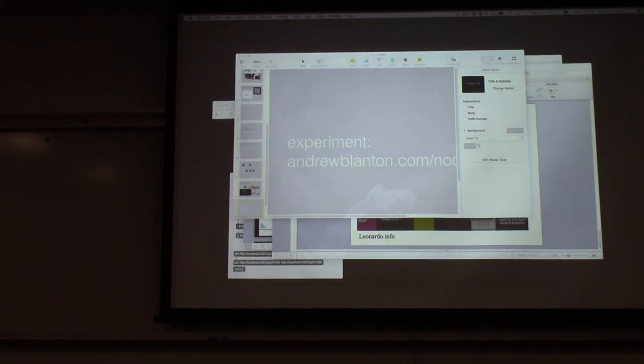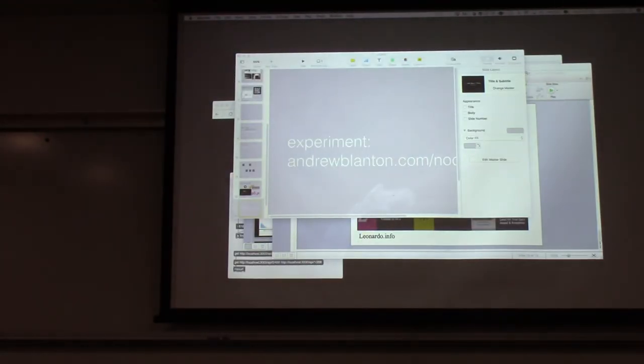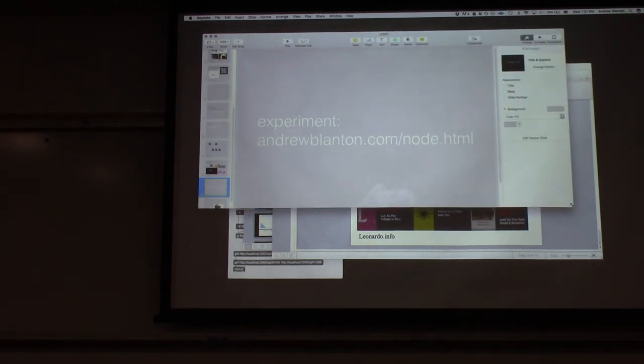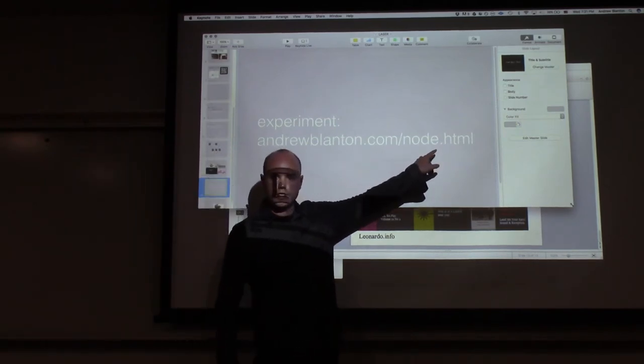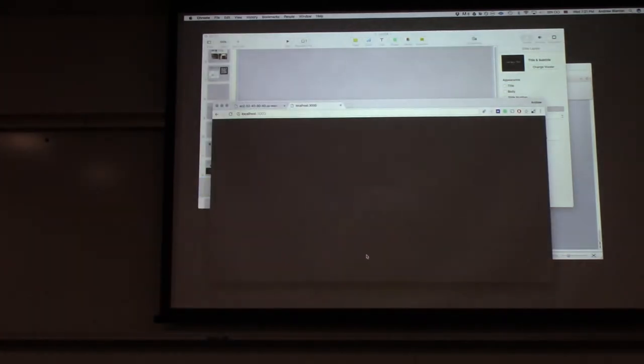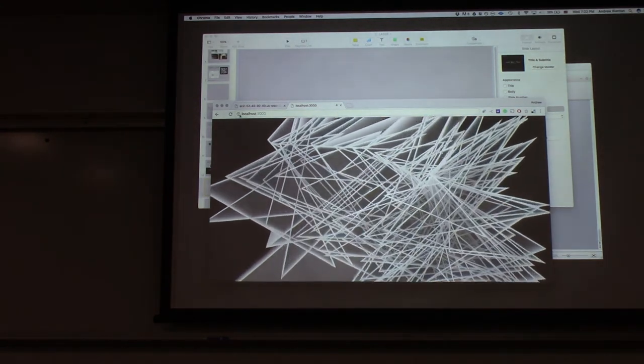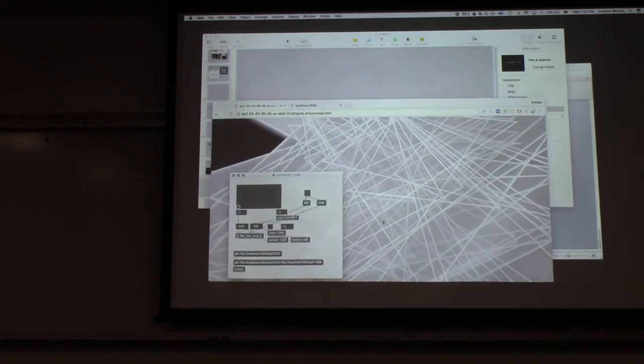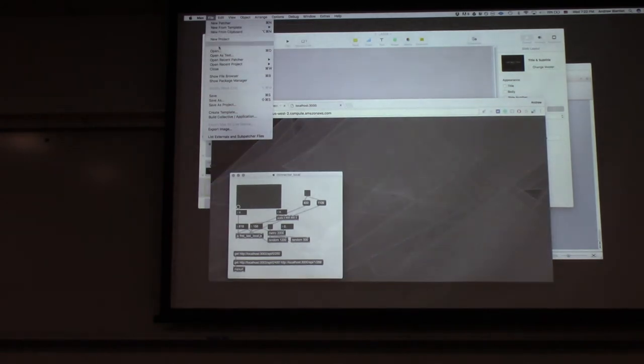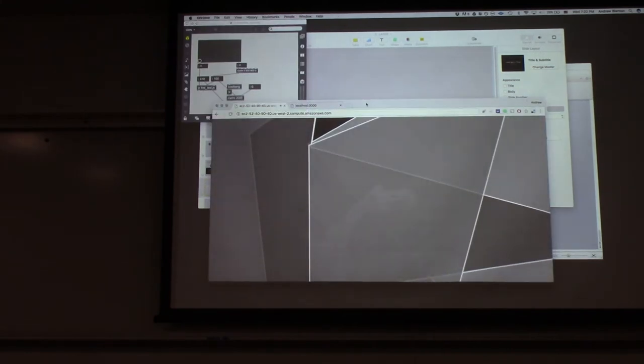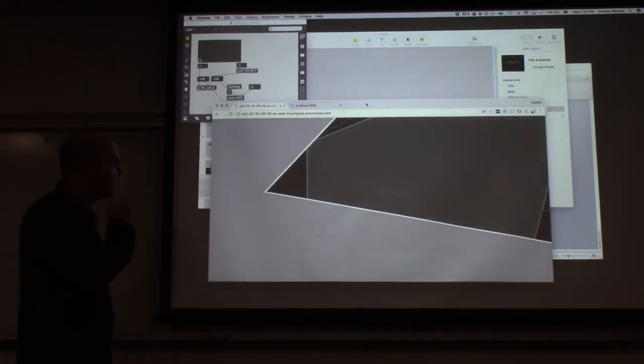Andrew Blanton dot com. Yes, so if you go on your mobile phones to this website, andrewblanton.com backslash node.html—that dot html bit is important—node.html. That should redirect you to an Amazon EC2 server. It should look something like this.